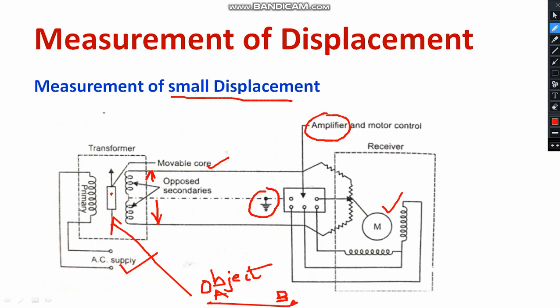With respect to the displacement, as the core starts moving, the output voltage of the transformer gets varied. That output is amplified with the help of a suitable amplifier, because the signal may be very small. The amplifier output is directly connected to the motor, and thereby the motor starts operating. The change in displacement is directly proportional to the output voltage, which directly depends on the motor movement. This way you can figure out small displacement in a simple manner.